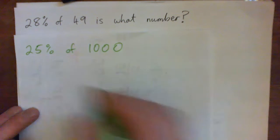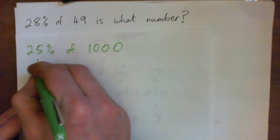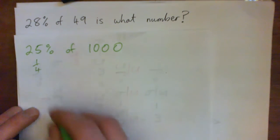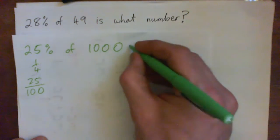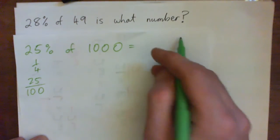So 25%, you might know, is actually a quarter. Did you know that? Because it's 25% per 100. So think of that as a quarter. So just write down, take your time, write down what is a quarter of 1,000.